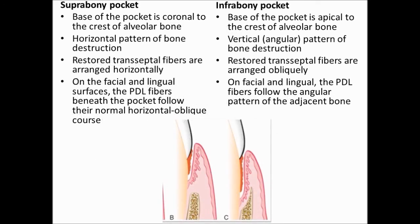I have drawn up a comparison table for the supra-bony pocket versus the infra-bony pocket. As mentioned: in the supra-bony pocket the base of the pocket is coronal to the alveolar bone and the pattern of bone loss is horizontal; while in the infra-bony pocket the base of the pocket is apical to the alveolar bone and the pattern of bone loss is vertical.